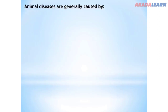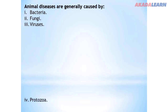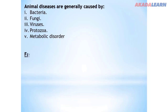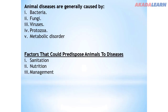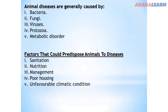Animal diseases are generally caused by: bacteria, fungi, viruses, protozoa, and metabolic disorders. Factors that could predispose animals to diseases include: poor sanitation, nutrition, management, poor housing, unfavorable climatic conditions, and breeds of animals.